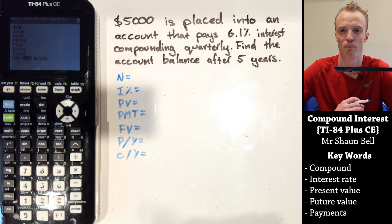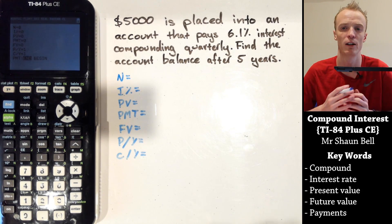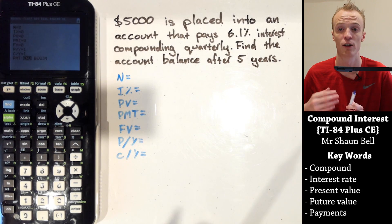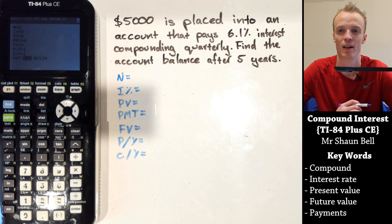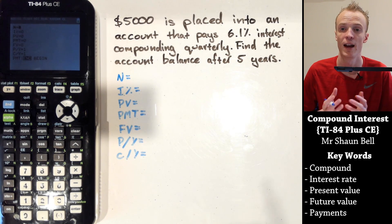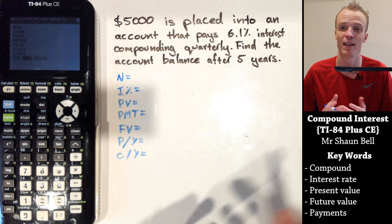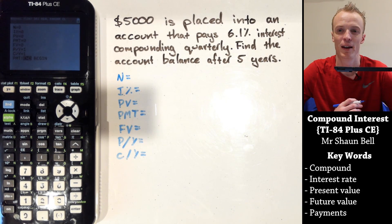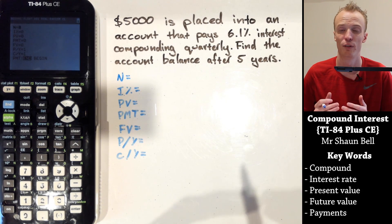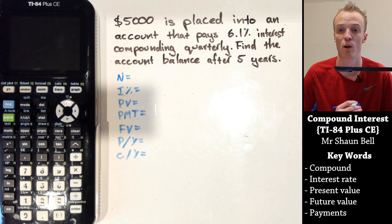PMT stands for payments per term — if you're making regular contributions to your savings, or in a loan, how much you're paying off regularly. FV stands for future value — how much of the loan is remaining, or in an investment situation, how much money you'll have in the account at the end. P/Y stands for payments per year — how often you're making those payments.